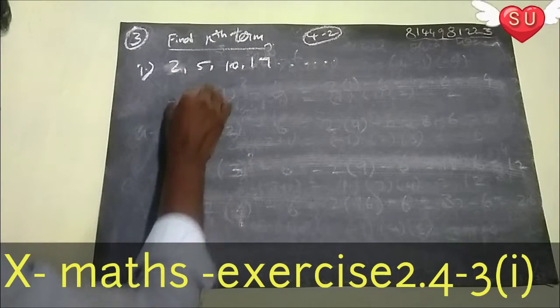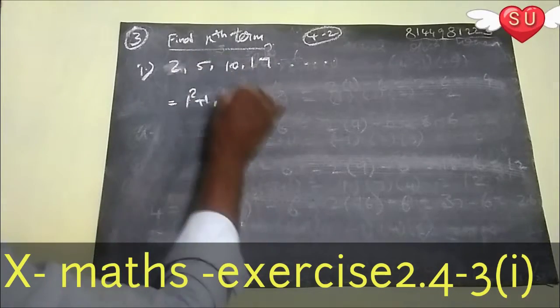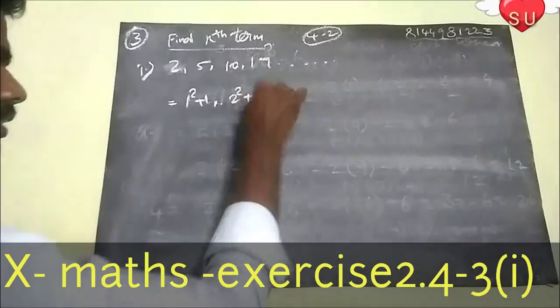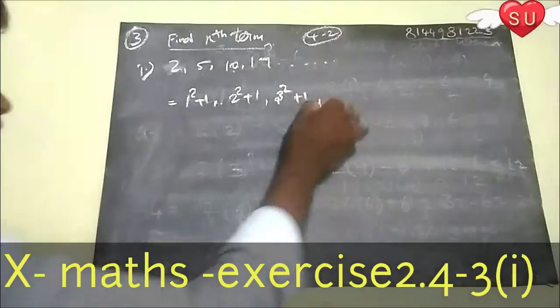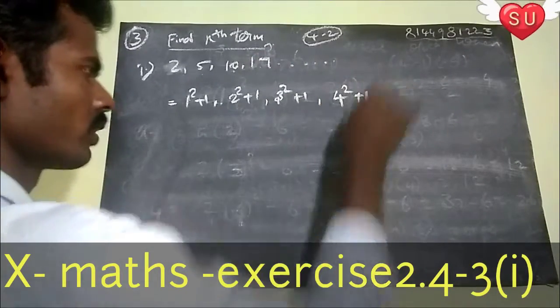2 is 1 square plus 1. 2 square plus 1. Next, 3 square plus 1. Next, 4 square plus 1.